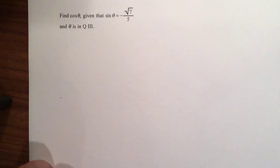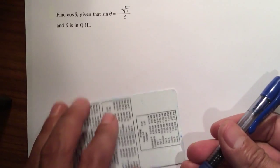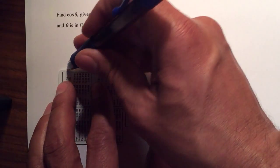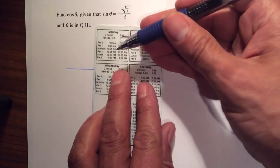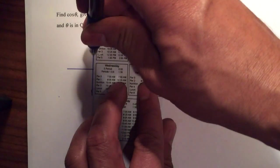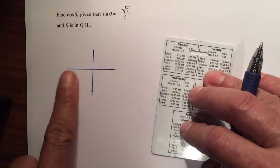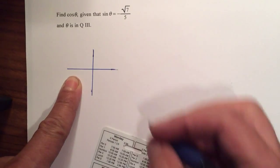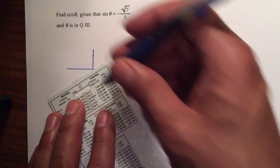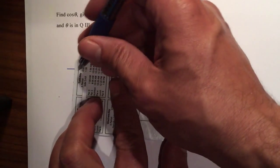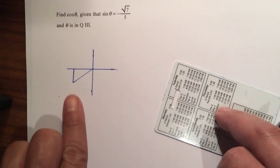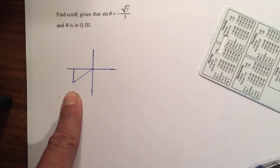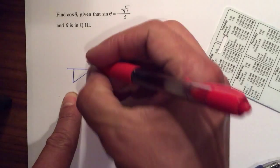Now since the angle is in quadrant number 3, you want to make sure that you draw your x and y axis. So here's my x axis and my y axis. And it's on quadrant number 3, so I'm going to place a generic triangle on this quadrant. I'm just going to make a regular generic right triangle towards the x axis. And we are talking about this angle here.